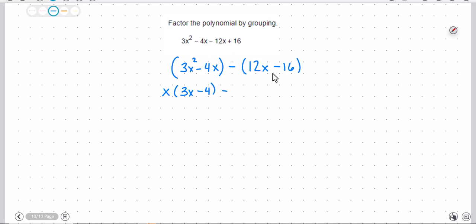And on this piece, I can factor out a 4, so that would give me 3x minus 4. And that's kind of how you know how to factor these is you should get the same second factor.